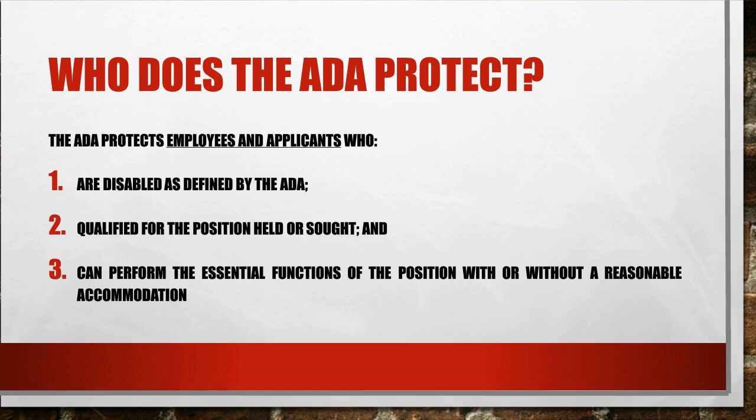The ADA protects people who are disabled under the law's definition. Those people must be qualified for the position they're seeking or currently in, and they must be able to perform the essential functions of that position with or without a reasonable accommodation. If they don't need an accommodation and can perform the duties of the job, there's no issue — you can have a disability and still do your job.